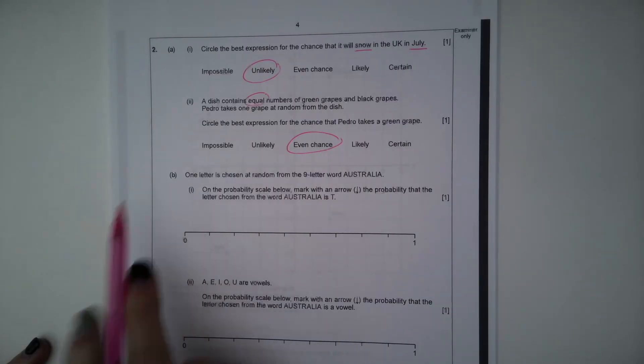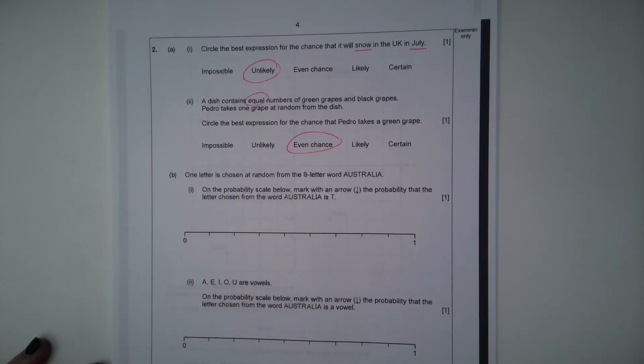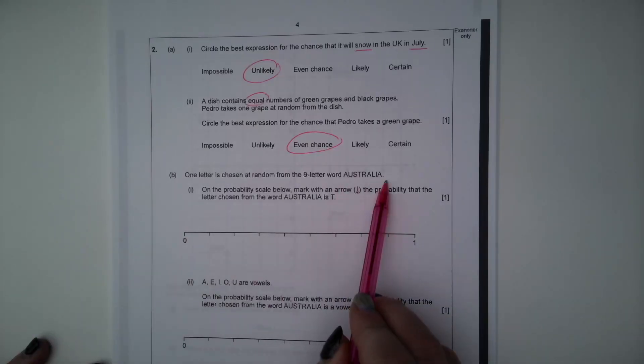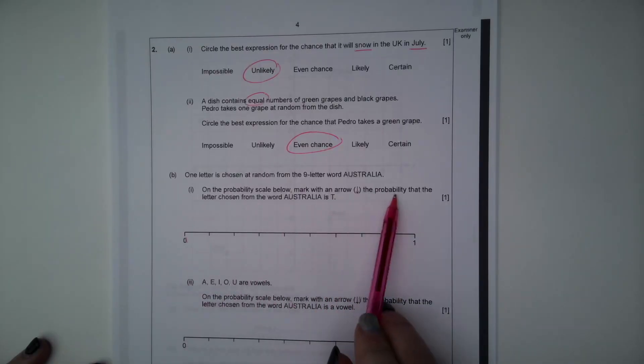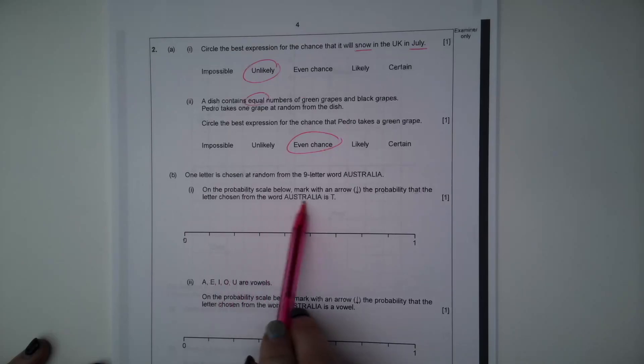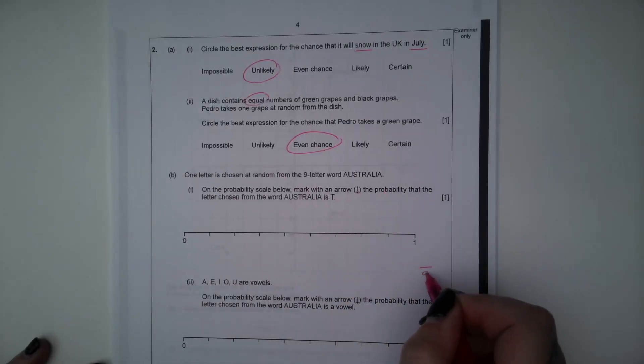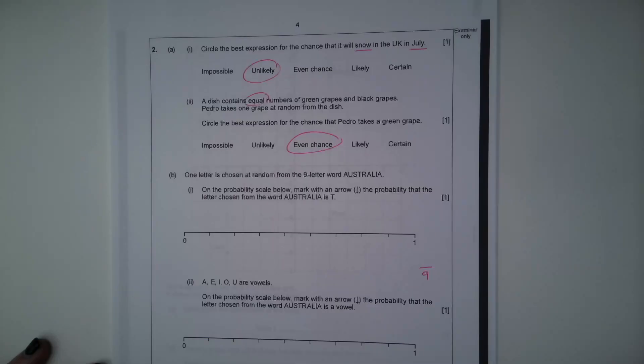Part B. One letter is chosen at random from the nine-letter word Australia. On the probability scale below, mark with an arrow the probability that the letter chosen from the word Australia is T. So first of all, there's a nine-letter word. So if we were writing it as a fraction, it would be out of nine. And then how many T's are there? Well, there's only one T, so it's one-ninth.